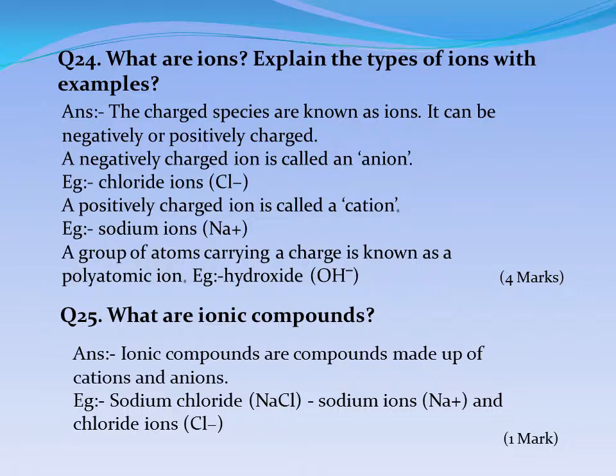Question No. 25: What are ionic compounds? Answer: Ionic compounds are compounds made up of cations and anions. Example: Sodium chloride, which consists of sodium ions and chloride ions.